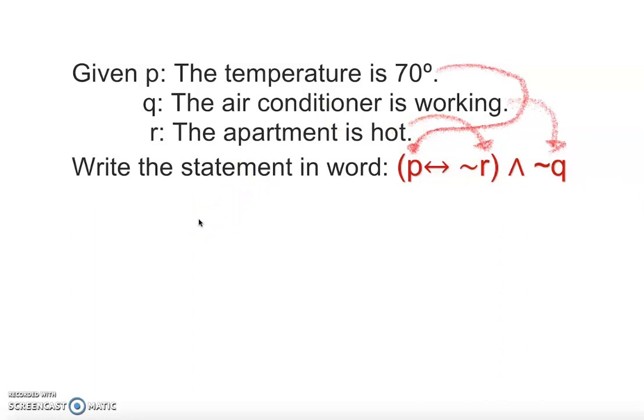Okay, so we are going to actually write down: the temperature is 70 degrees means this is p. The temperature is 70 degrees if and only if, now we do if and only if.